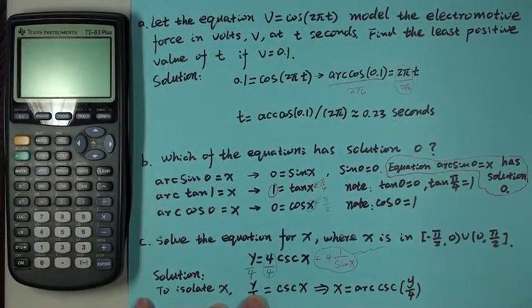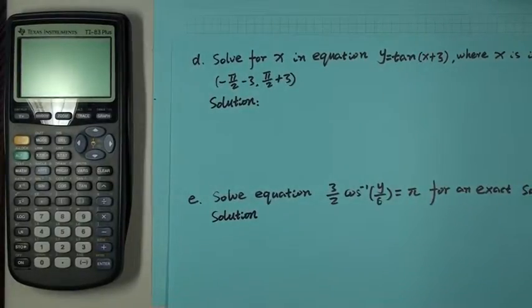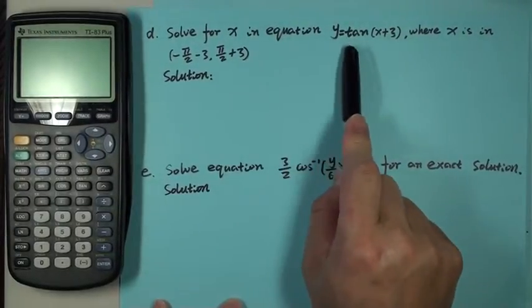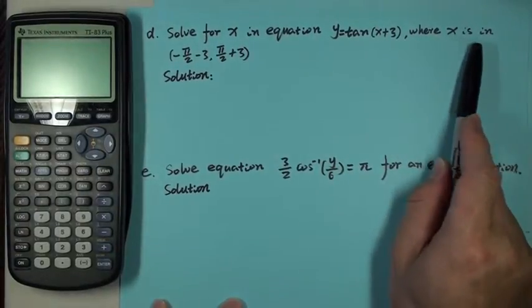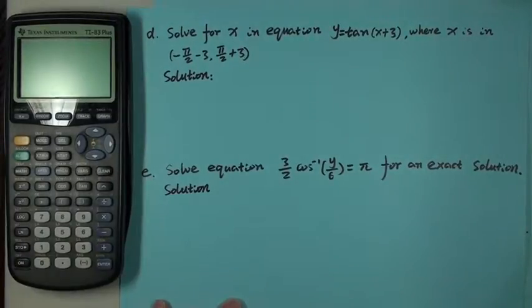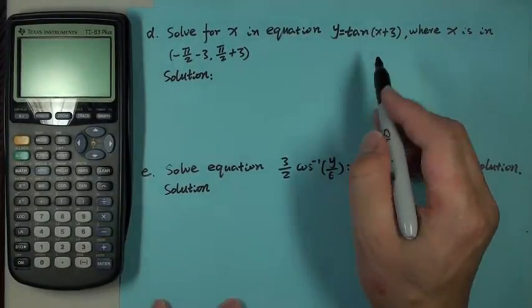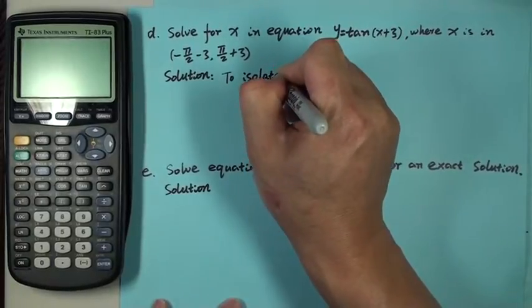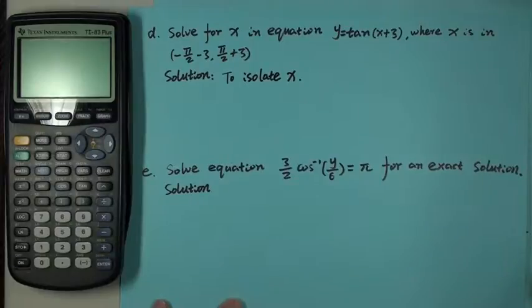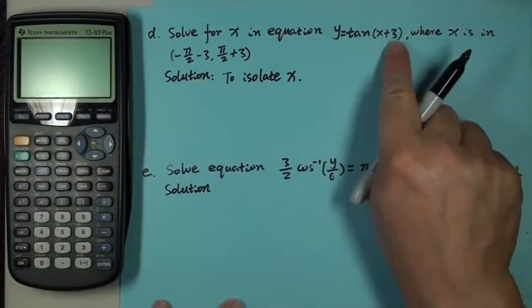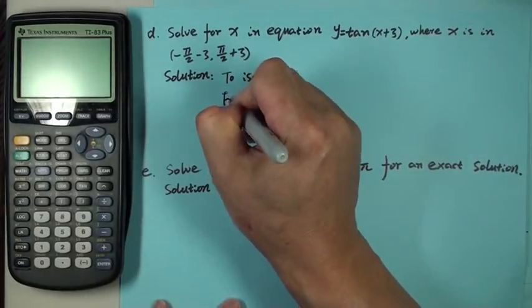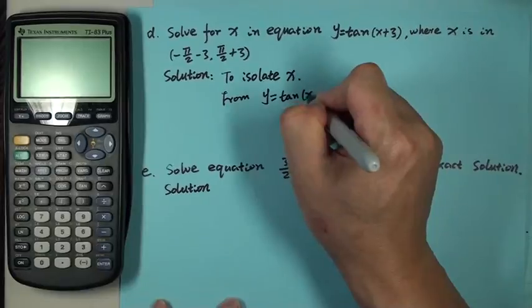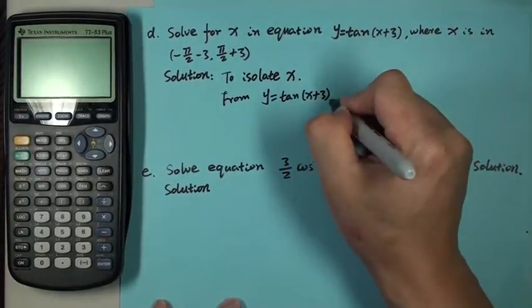Let's keep moving. We want to look at another question right here. We want to solve for x in equation y equals tangent x plus 3, where x is in this place. Again, solve for x means to isolate x. That's the meaning for solve.